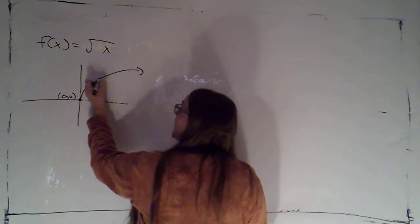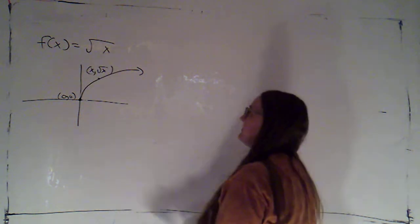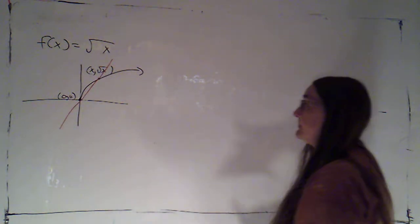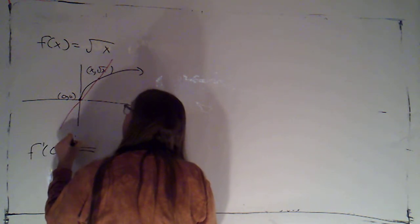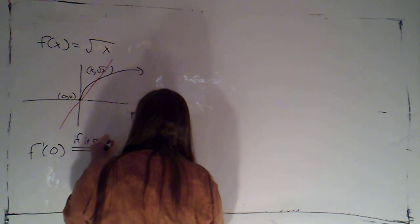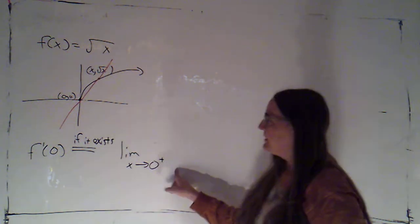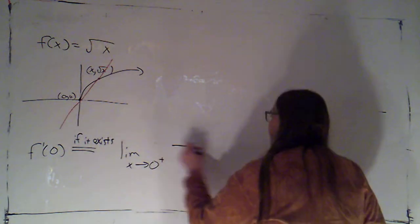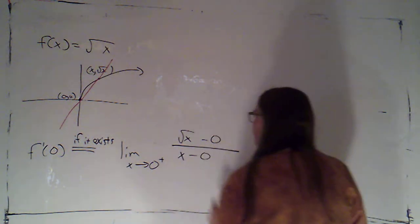So, I would choose a nearby point. Since we're working with a specific point here, I can call my second point just x root x. And then I can draw in that secant line. And f prime of zero is going to equal, if it exists, it would be the limit as x approaches zero from the right. Because I can't come in from the left because there aren't any points over here. Rise over run would just be root x minus zero over x minus zero.